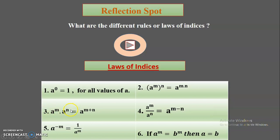The third law of indices: a raised to m into a raised to n — if the base is the same and indices are different, and the terms are in multiplication form, you can rewrite it as a raised to m plus n. Common base, indices get added. The fourth law: if the same base terms are in division, a raised to m upon a raised to n, rewrite as a raised to m minus n. For multiplication, add the indices; for division, subtract them.